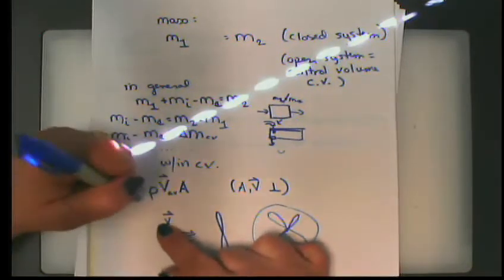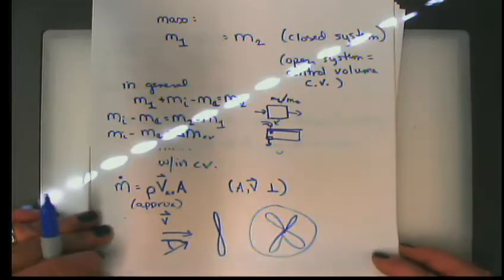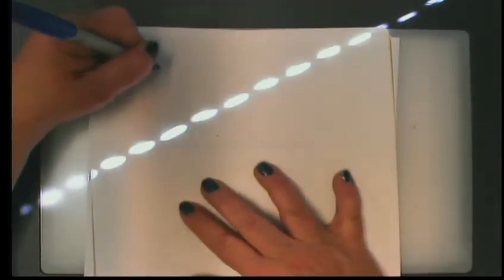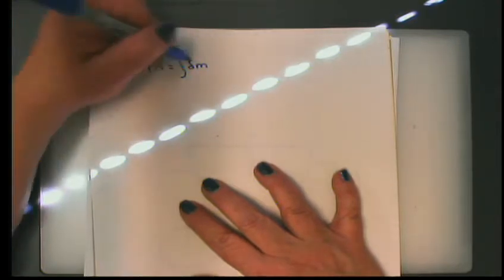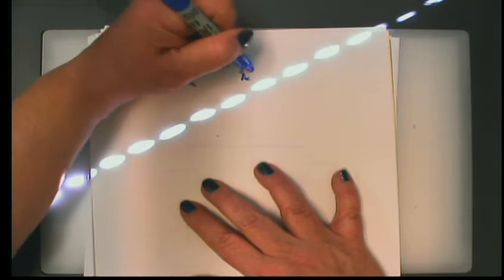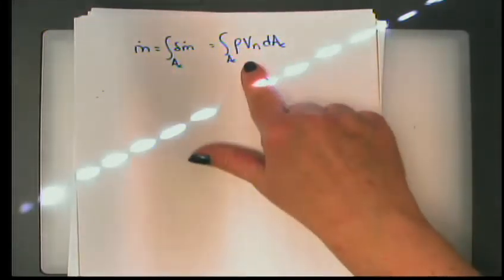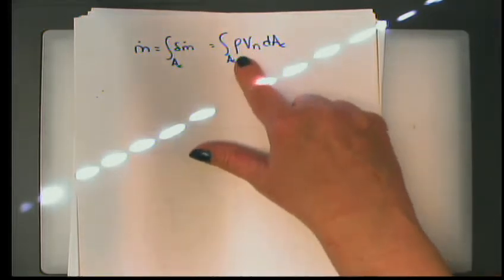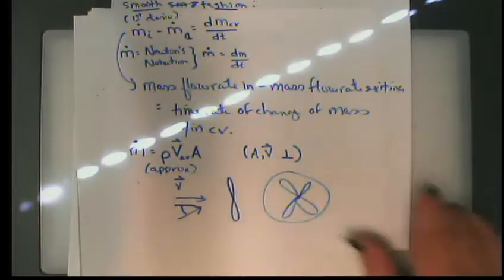This is actually an approximation. If the density or velocity is not constant, you need to go back to an integral form: M-dot equals the integral of rho times V-normal dA over the cross-sectional area of the control volume. This is the more general form. If you have non-constant density you need a functional relationship. But for incompressible fluids flowing steadily, you can often use the simpler equation for mass flow rate.